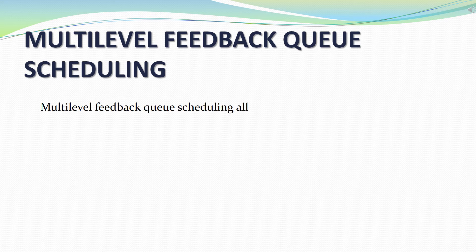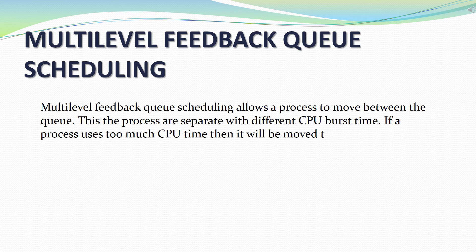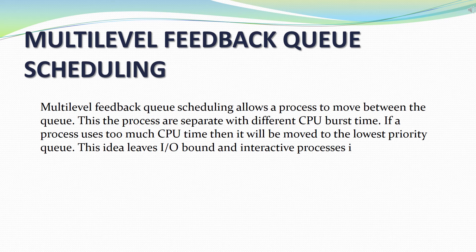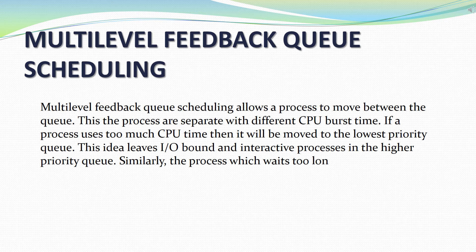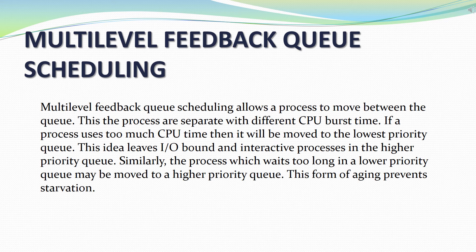Now what is multi-level feedback queue scheduling? Multi-level feedback queue scheduling allows a process to move between queues. This separates processes with different CPU burst times. If a process uses too much CPU time, then it will be moved to the lowest priority queue. This idea leaves input-output bound and interactive processes in the higher priority queue. Similarly, a process which waits too long in a lower priority queue may be moved to a higher priority queue. This form of aging prevents starvation.